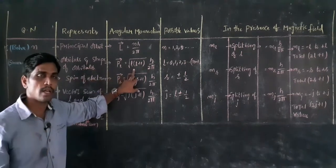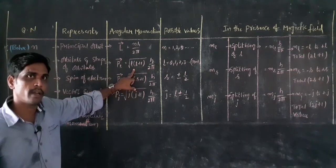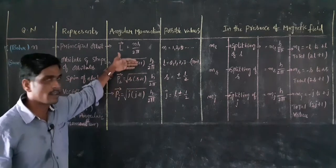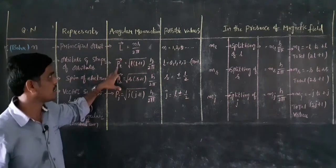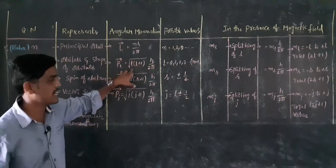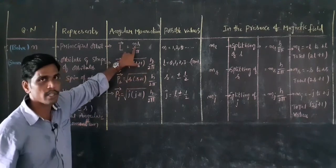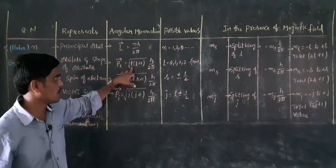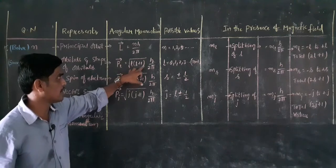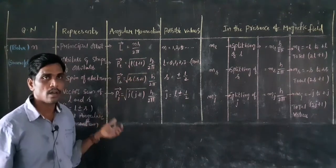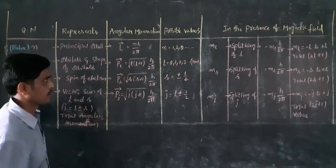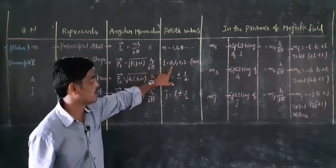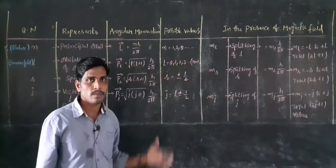An orbital has a small angular momentum, quantum mechanically. When we write the expression, P_L is equal to L·h/2π. The corrected result is P_L̄ = √(L(L+1))·h/2π, where L is called the orbital quantum number. The value of L is equal to 0, 1, 2, 3, and so on up to n−1.